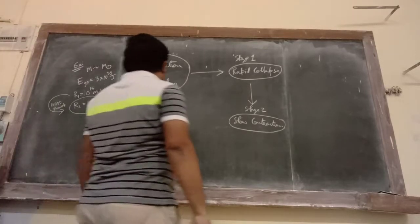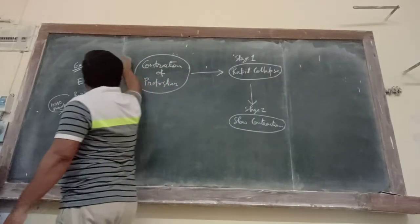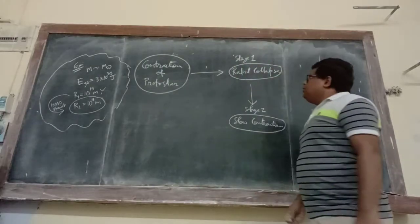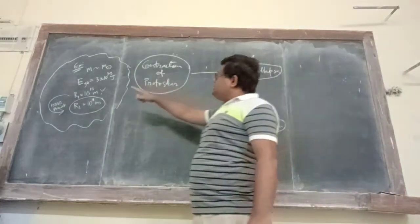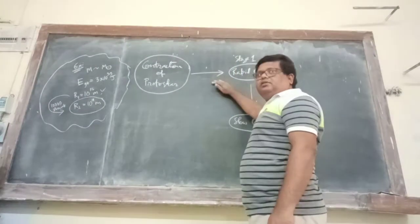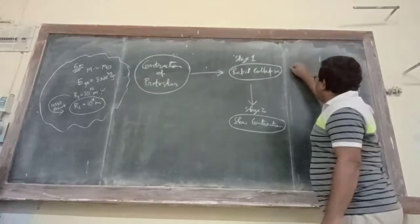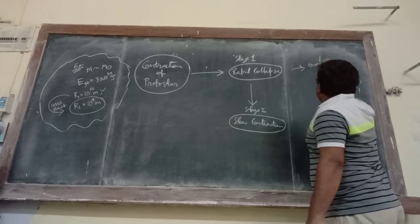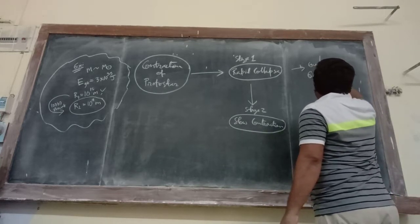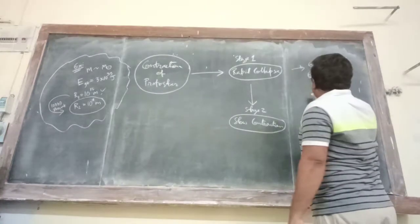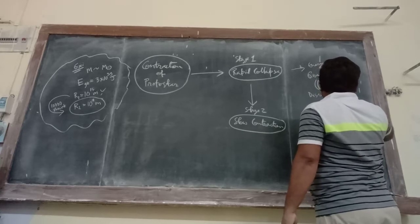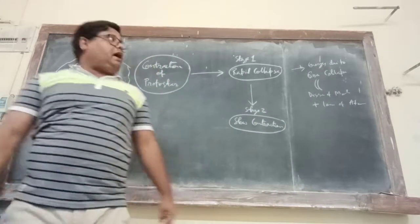So this is our example of protostar contraction. We considered a molecular hydrogen cloud of solar mass. The first stage during the contraction is the rapid collapse stage. During this stage, energy due to gravitational collapse feeds first dissociation of molecules, and later ionization of atoms. During this rapid collapse, the molecules are freely falling — free collapse. Dissociation happens first, then ionization, and so on.